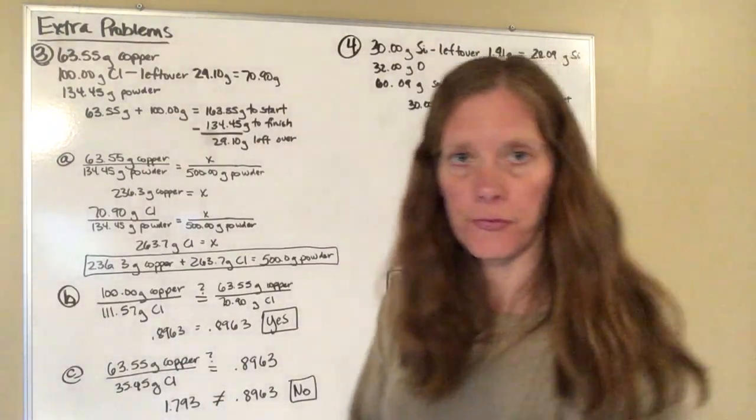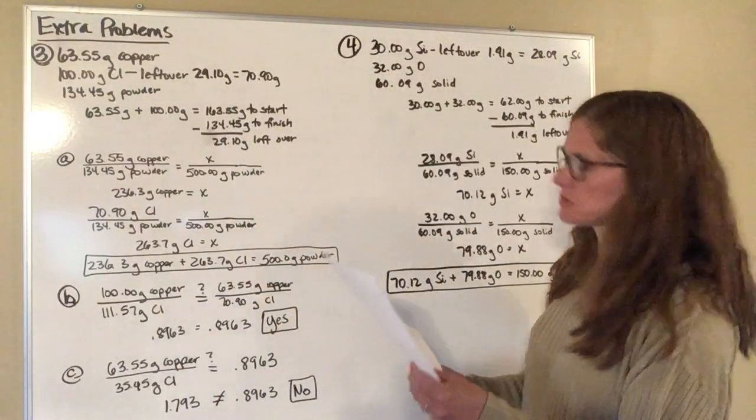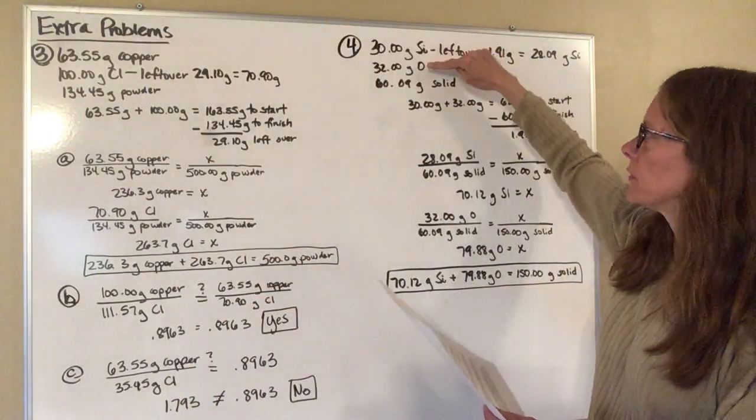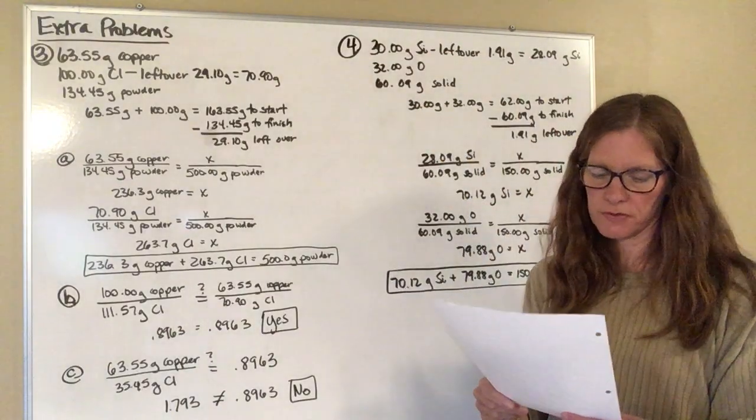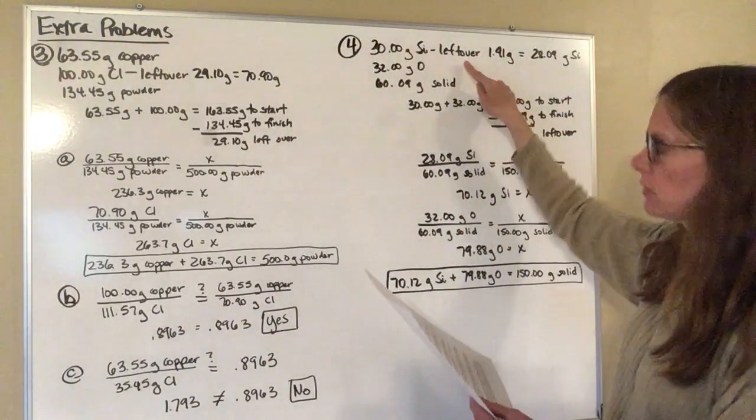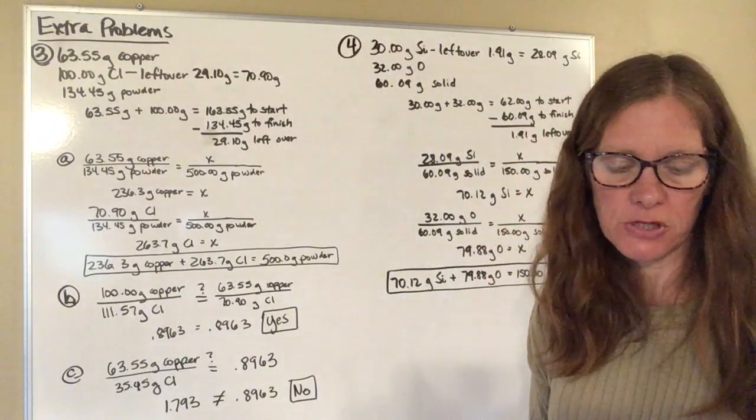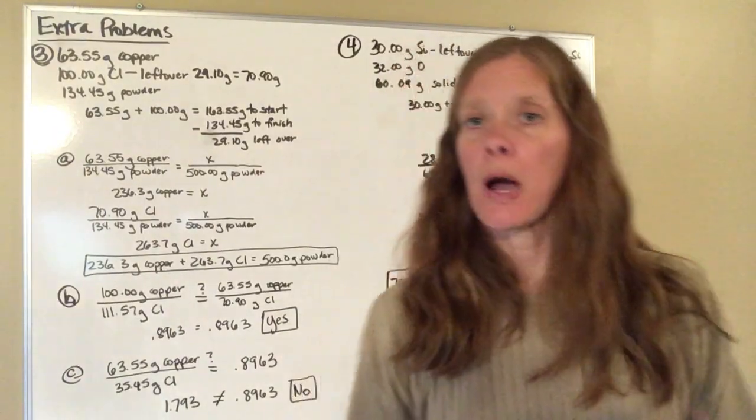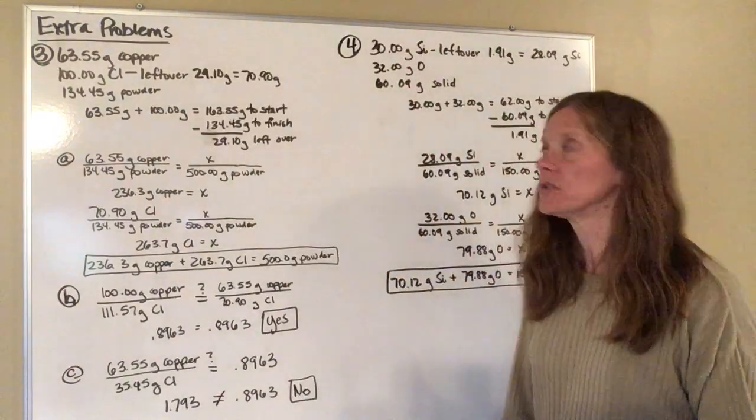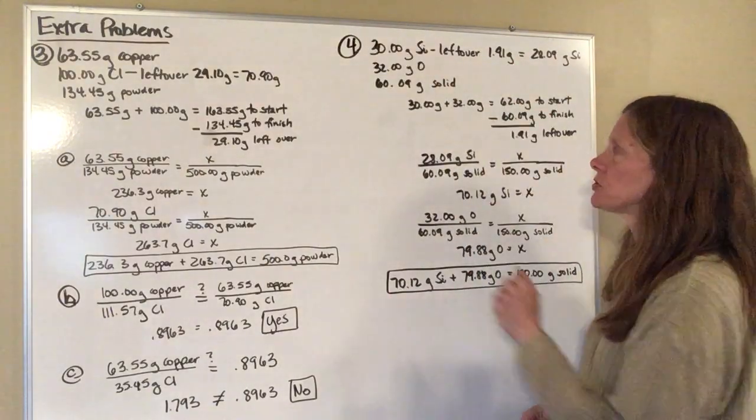Alright. Number four, a chemist combines 30 grams of silicon with 32 grams of oxygen. The result is 60.09 grams of a solid and some leftover silicon. How much silicon and oxygen should she use to make 150 grams of the solid with no leftovers? So similar problem to some that we've already worked a number of times.